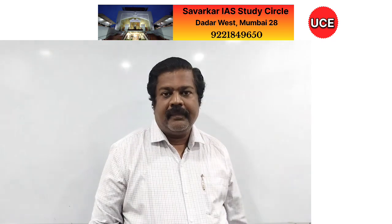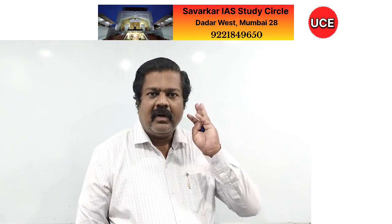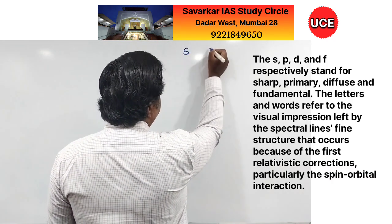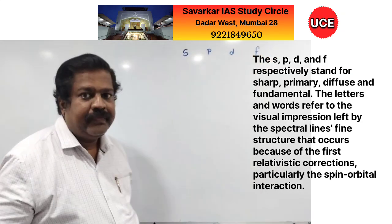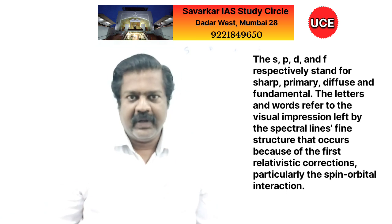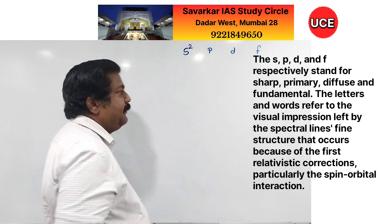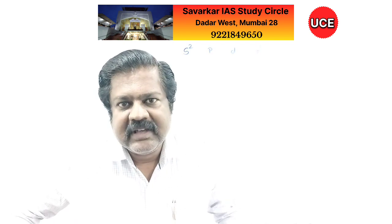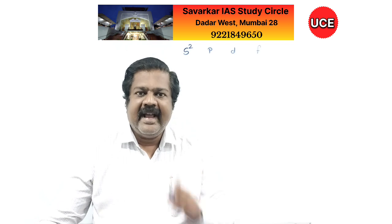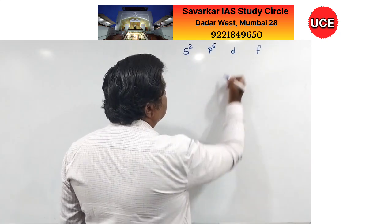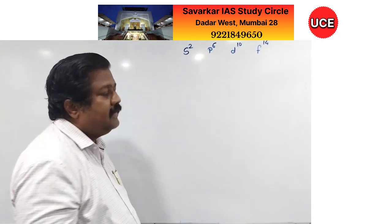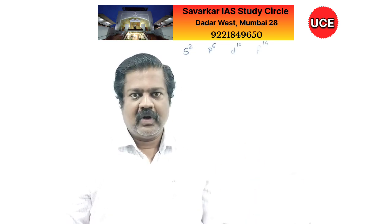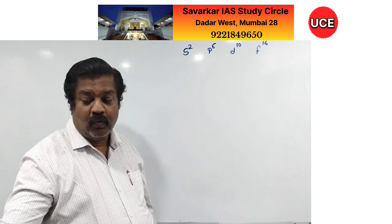Now, the orbits irrespective of their shell number n=1, 2, 3 and so on are distributed in the format: s, p, d, f — these are subshells of every orbit. The capacity of s is 2, written as a superscript — read it as 's2', not 's squared'. Then p has capacity 6, d has capacity 10, and f has capacity 14. These are the maximum capacities of electrons in a subshell.